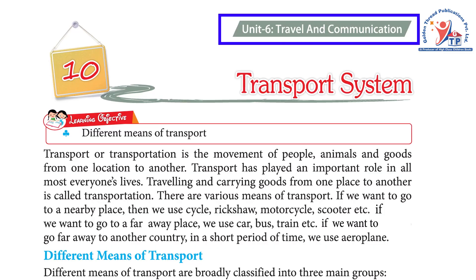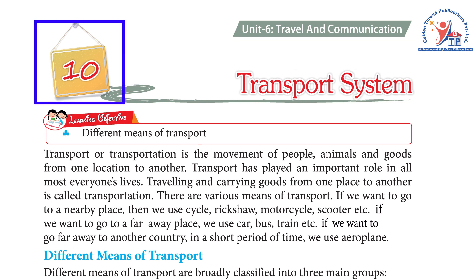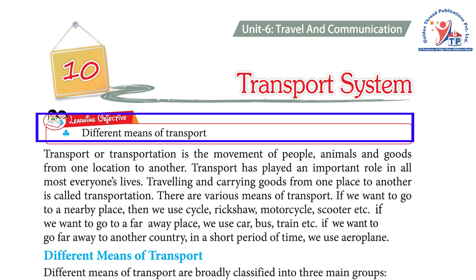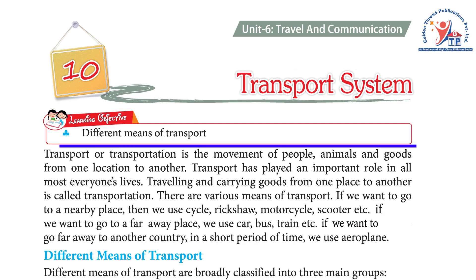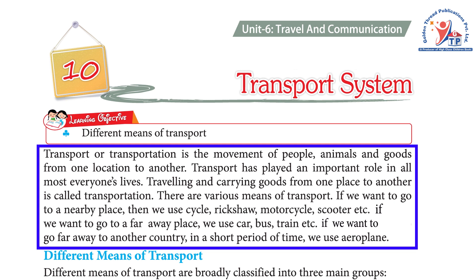Unit 6: Travel and Communication. Chapter 10: Transport System. Learning Objective: Different means of transport. Transport or transportation is the movement of people, animals, and goods from one location to another. Transport has played an important role in almost everyone's lives. Traveling and carrying goods from one place to another is called transportation. There are various means of transport.